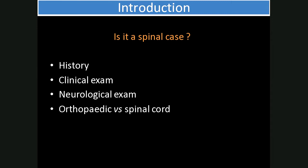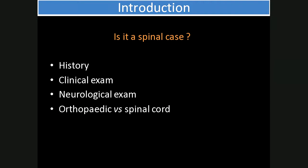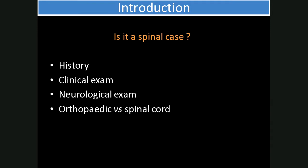A neurological exam will help to localize the lesion. It's important to remember that some conditions may mimic spinal cord disease — for example, cranial cruciate ligament rupture, especially if it's bilateral, other neurological conditions such as myasthenia gravis, or even acute abdomen.